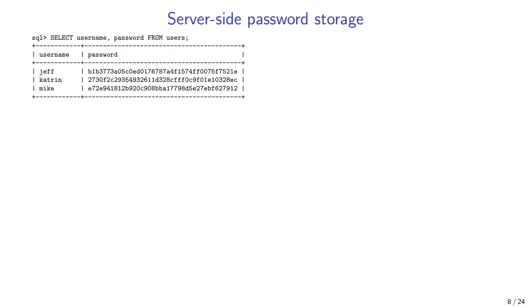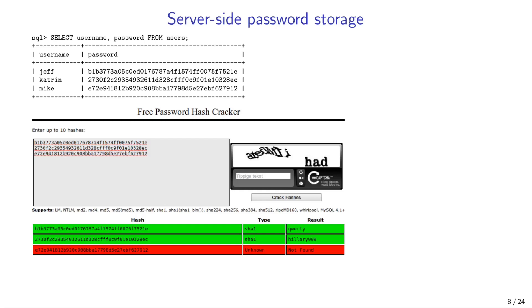Here is how our database table users will look once we have implemented password hashing — we have the username and the hash of the password. But we still have a security problem: if an attacker gets the hash, they can brute force it by trying different passwords until they find one that produces this hash. Even worse, there are websites where you can paste hashes and instantly get the password that produced the hash — for two out of three hashes the password is provided instantly without any brute forcing in the backend.